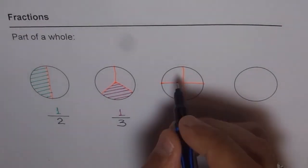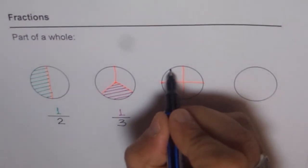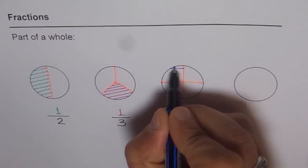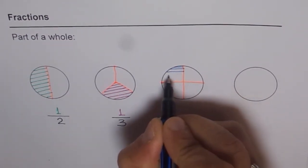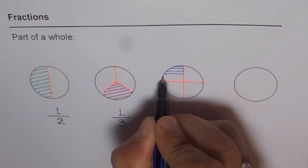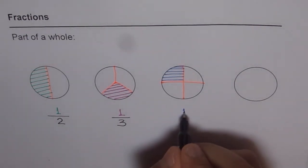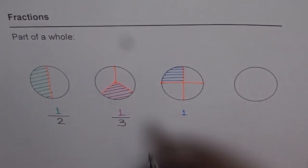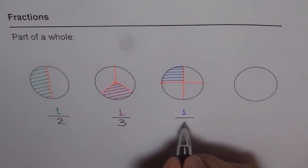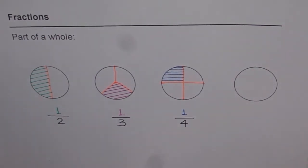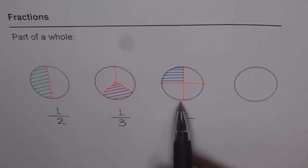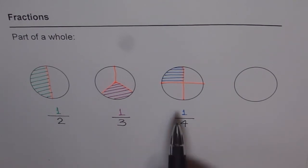For the third circle, I will shade one of the portions and let me shade it in color blue. Now what portion of this whole have I shaded blue? I have shaded one out of how many? It is four — one out of four. So in this case we will say the fraction shaded is one out of four. It could be read as one-fourth also.